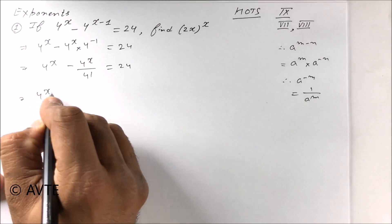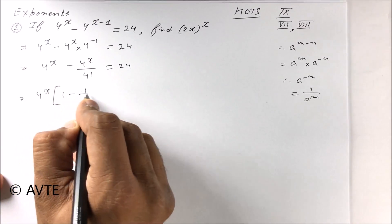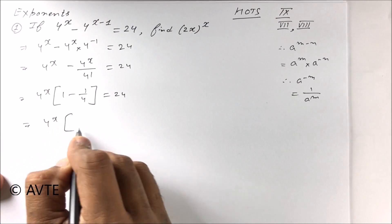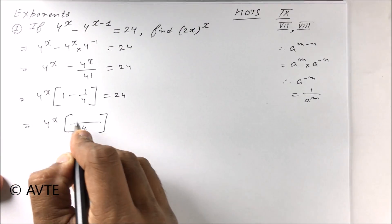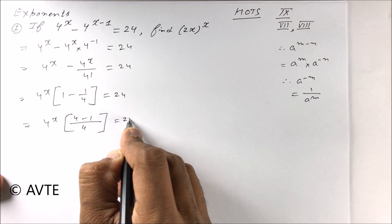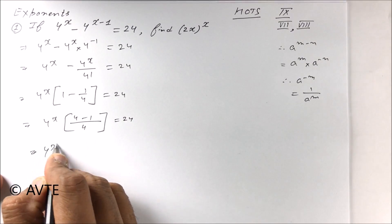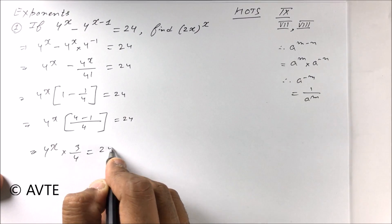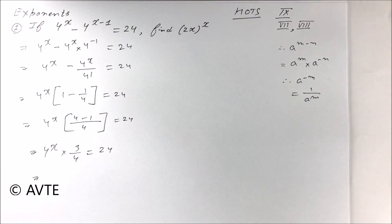We can take 4 raised to power x common. So 1 minus 1 by 4 equals 24. This is 4 raised to power x into 3 by 4 equals 24. So 4 raised to power x equals 24 into 4 upon 3, which equals 32.